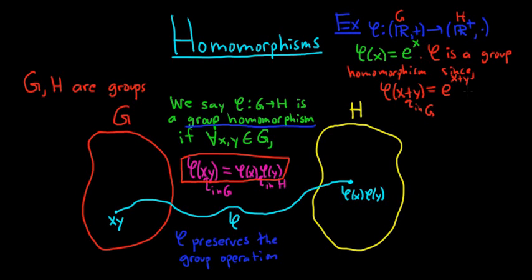Then you can use properties of exponents. This is e to the x times e to the y. And that's equal to phi of x times phi of y. And this is true for all x, y in the set of real numbers. So that shows that phi is a group homomorphism. So e to the x is a classic example of a group homomorphism.